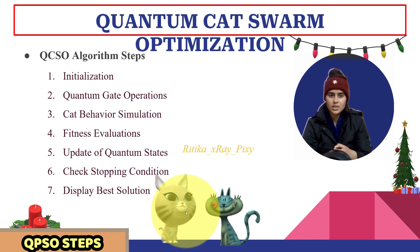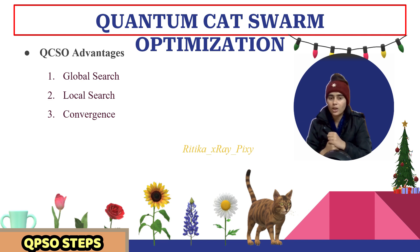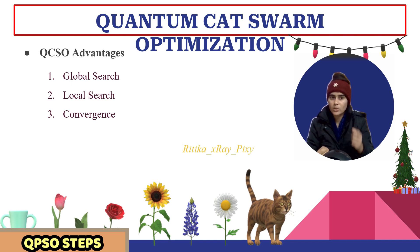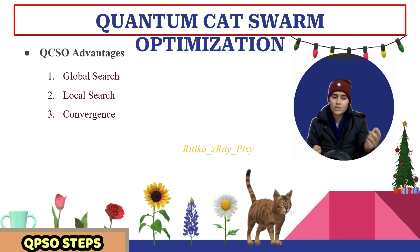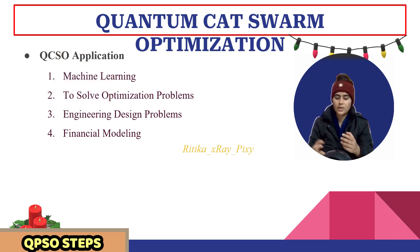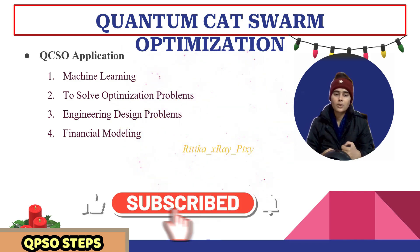After that, we check the stopping condition. If it is met, we output the best solution; else we repeat the loop, randomly distributing cats into tracing mode and seeking mode. As advantages: quantum cat swarm optimization algorithm — combining quantum computing principles with cat swarm optimization — can jump out of local optima when stuck, improving solution accuracy. Due to quantum computing principles, qubits can exist in multiple states simultaneously, allowing search of multiple solutions in the search space. Applications include machine learning optimization problems, real-world optimization problems, financial modeling, and engineering design problems.